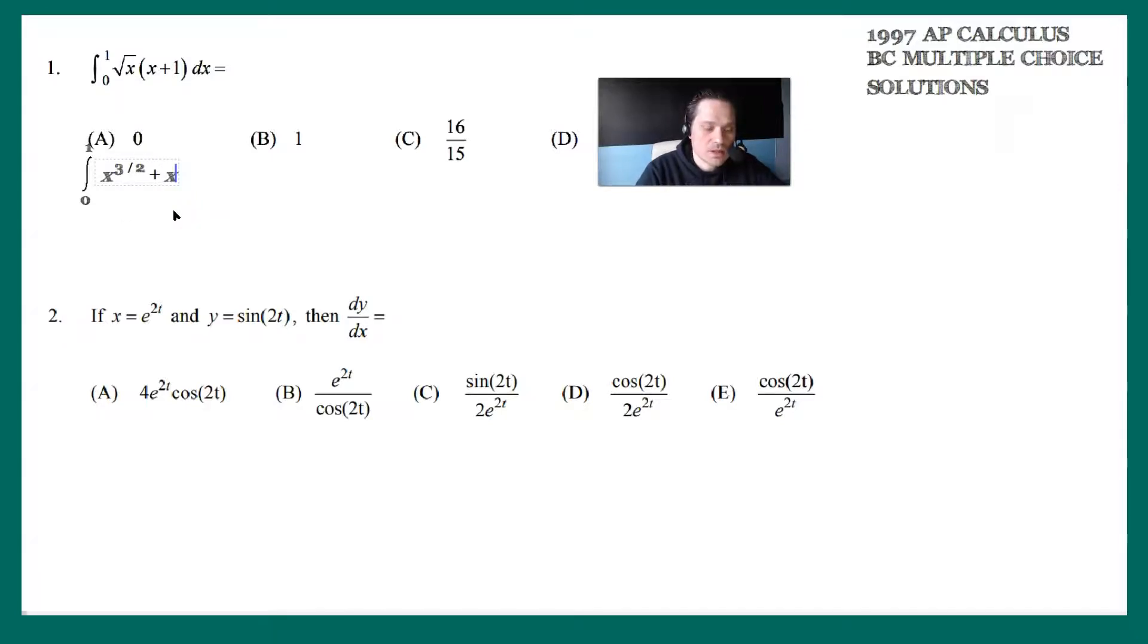And the same thing with the next one, it just becomes x to the 1 half and then dx. Let me move this down a little bit so you can see it better. Now from here you're going to integrate. So you're going to add 1 to the 3 halves. When you do that, it's going to be 3 halves plus 1, and the convenient form of 1 is 2 halves.